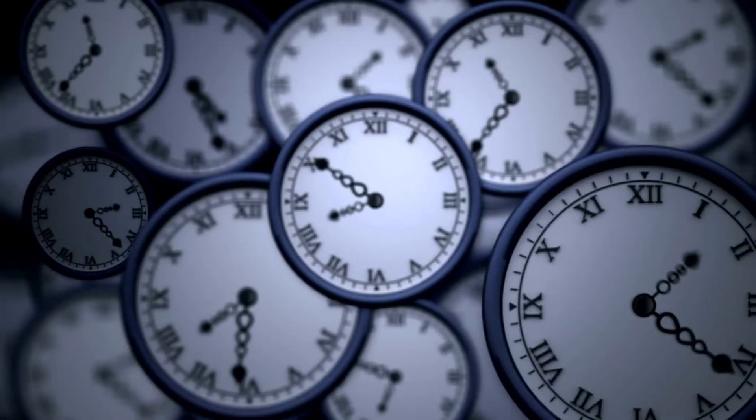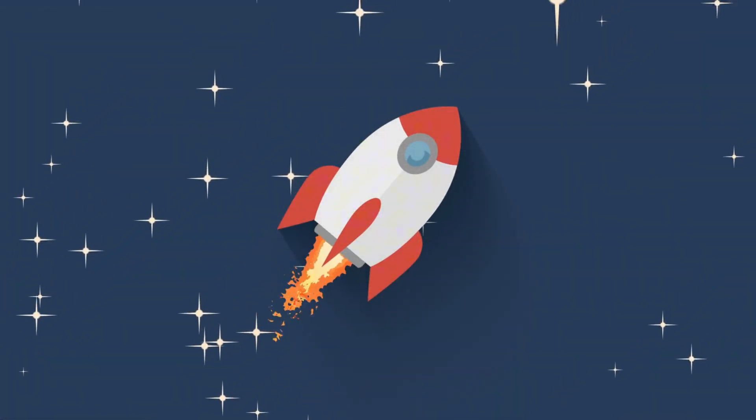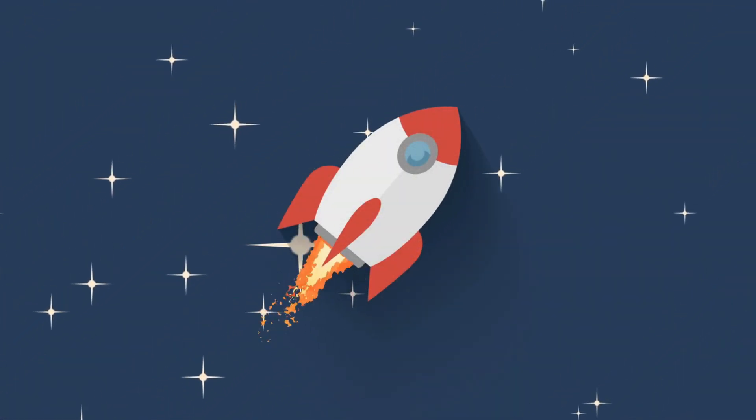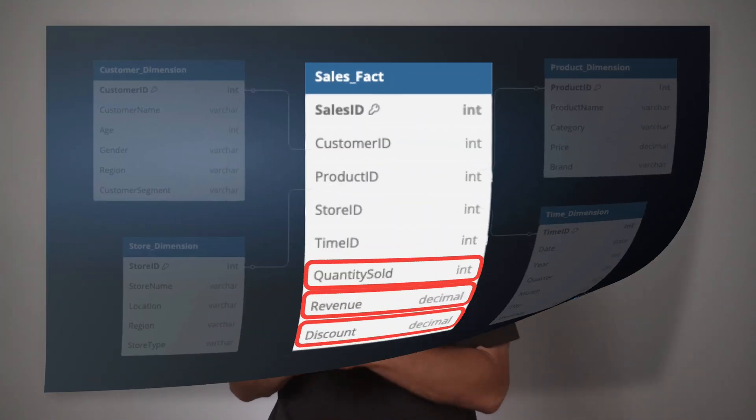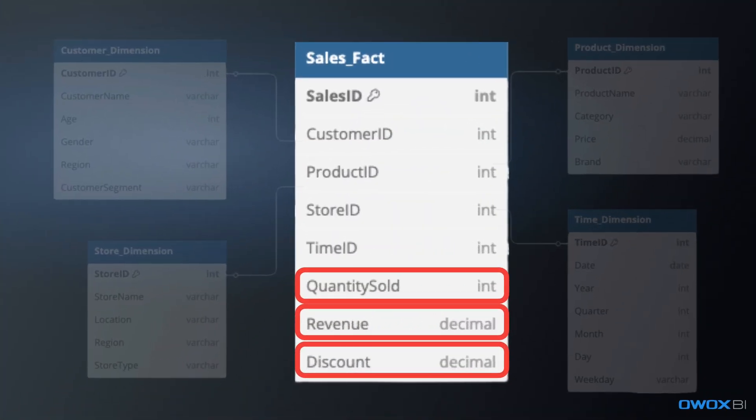But with a Star Schema, that question becomes a one-minute report — literally one minute to write SQL and get the data you need. Any data model would simplify this process, but Star Schema will do it like a rocket ship. In this example on the screen, you can see how this is solved with a clean Star Schema.